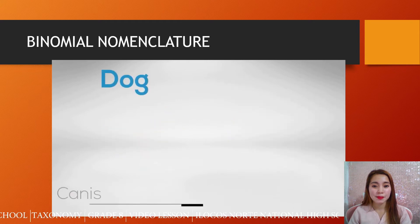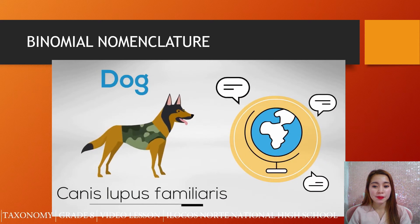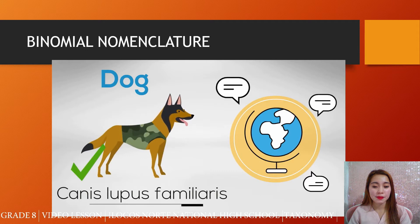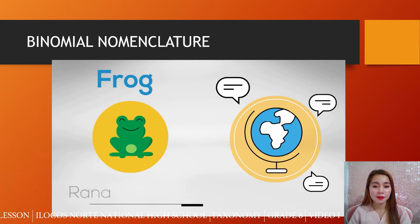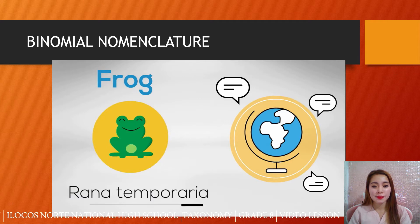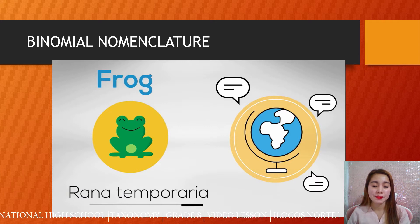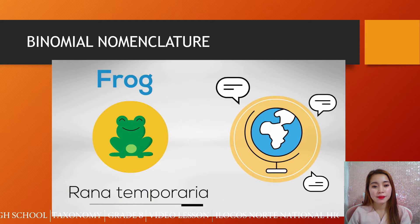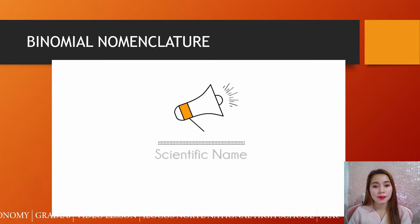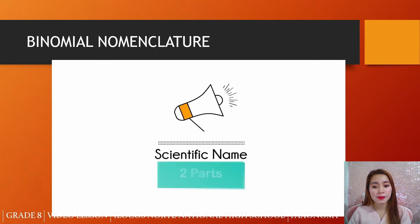Let's look at another example — a dog: Canis lupus familiaris. The genus is Canis and the species is lupus familiaris. How about the frog? There are over 5,000 types of frogs, so the scientific name tells you exactly which one you are talking about — Rana temporaria. The genus is Rana and temporaria is the species. A scientific name has two parts: it describes the genus and the species.